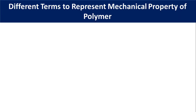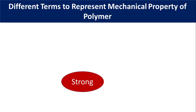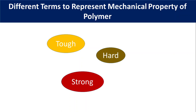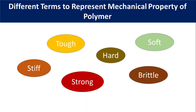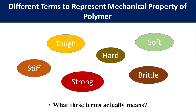When we talk about the mechanical property of polymer, we usually say the polymer is strong, tough, hard, brittle, stiff or soft. It is important that we understand what these terms actually mean, because a better understanding will help us know which is the most important property for a certain application. For example, car body parts need to be much more tough than strong. Why? Let's find out.